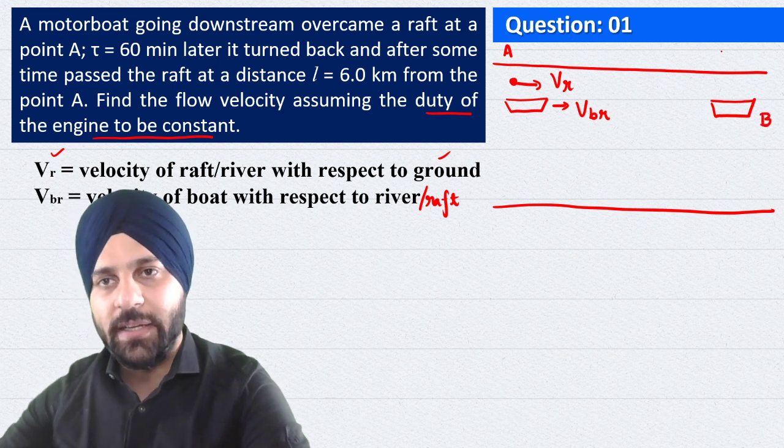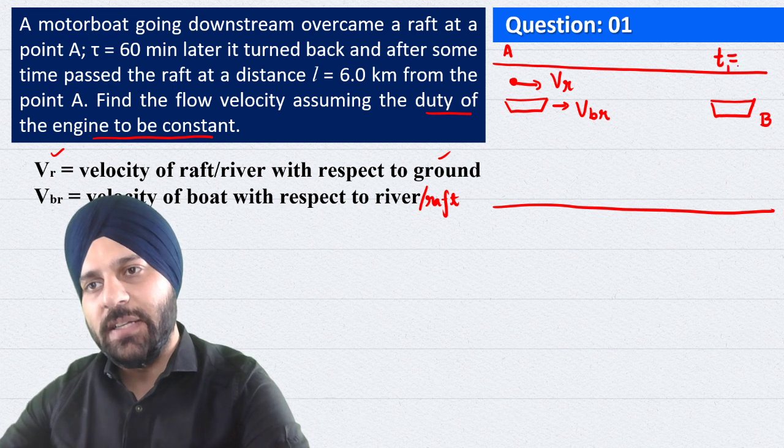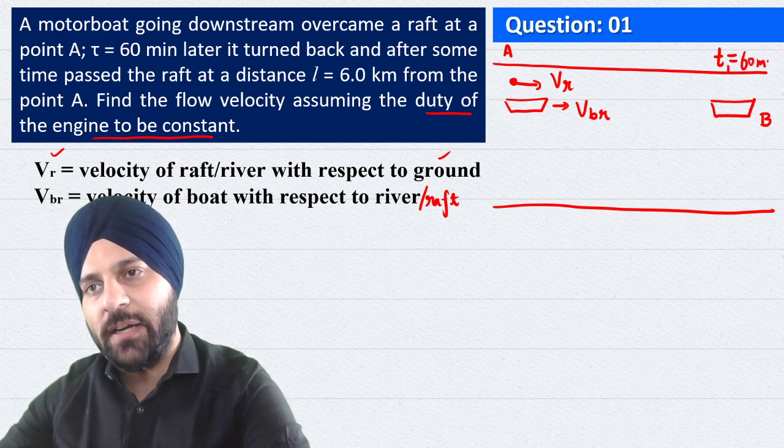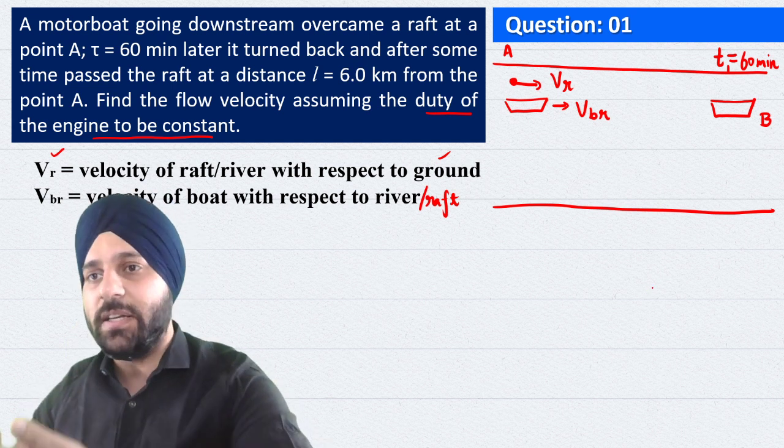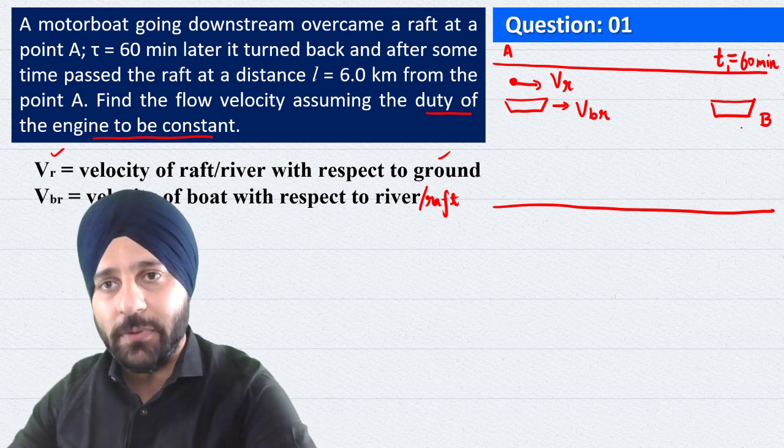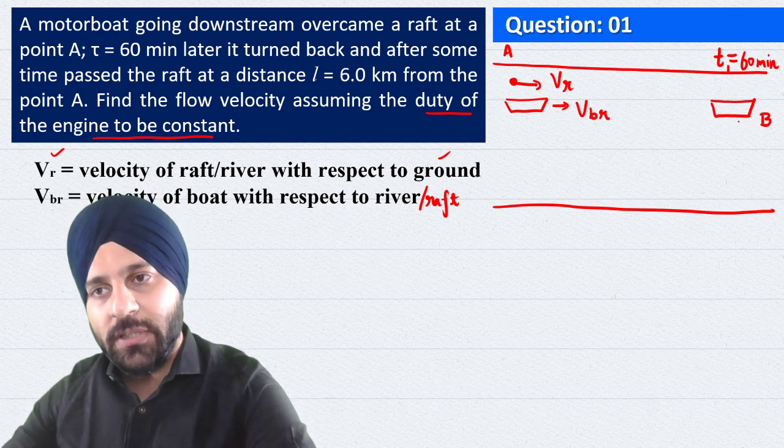We will consider the location of B. So T1 is equal to 60 minutes or 1 hour. It will come to this location. After that, the boat will turn back.